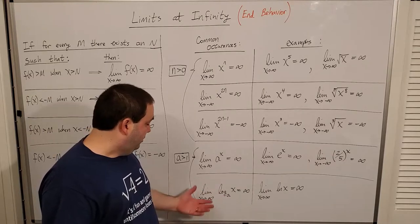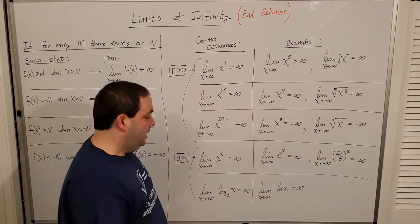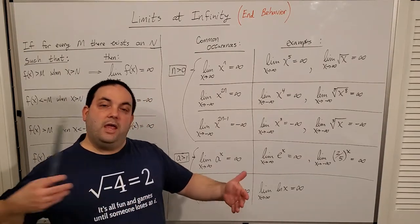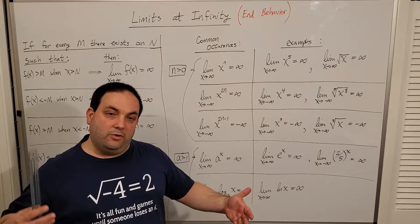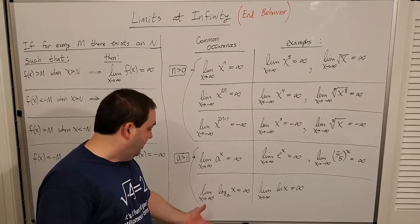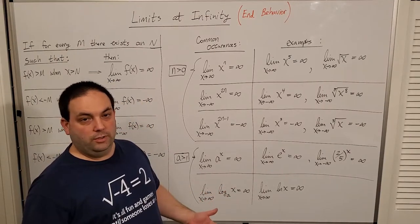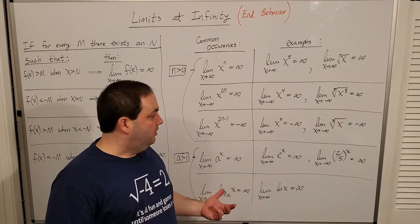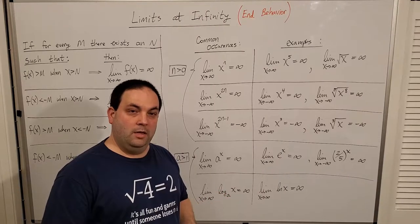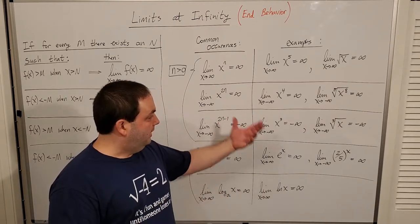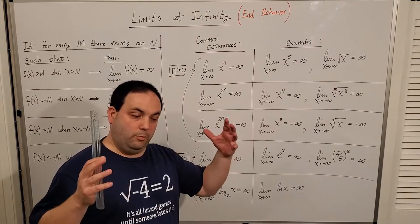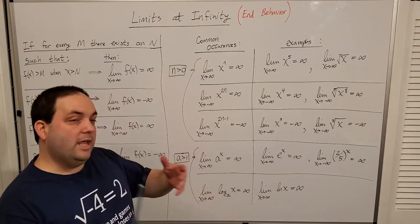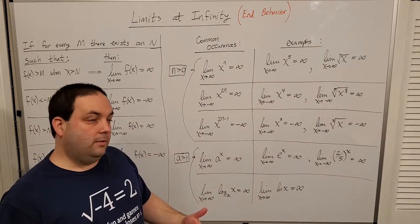Any basic logarithm as you let x go to positive infinity is going to also go to infinity. Logarithms don't have a negative allowed in their domain, so of course there's no limit as x goes to negative infinity of a logarithm. These are a lot of the common things that happen with these kinds of limits. We're going to talk about a couple of other pieces and put together all of the different possibilities that can happen as x goes to infinity or negative infinity.